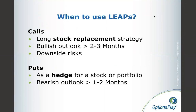There are two types of LEAPs: calls and puts. Calls are for those looking to replace a stock strategy — if you're bullish on a stock, you'd normally buy that stock. LEAPs are really a replacement for potentially buying a stock when you're bullish over a relatively longer period of time — at least two to three months out. If you're bullish on a stock for three months, six months, a year, or longer, these are the times you'd consider using a LEAP.